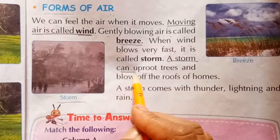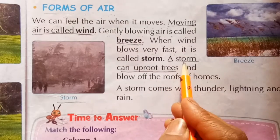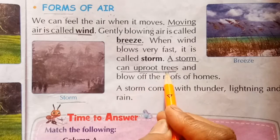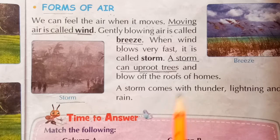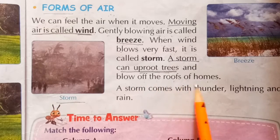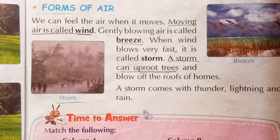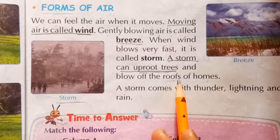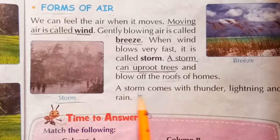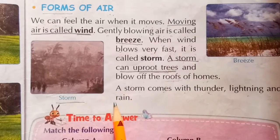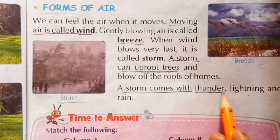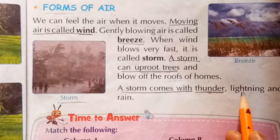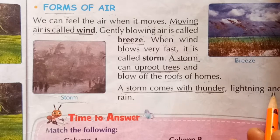A storm can uproot trees — storm uproots trees and blows off the roofs of homes. A storm comes with thunder — T-H-U-N-D-E-R — lightning — L-I-G-H-T-N-I-N-G — and rain.